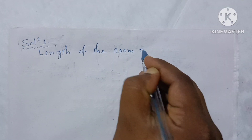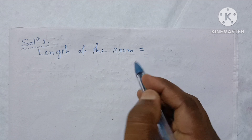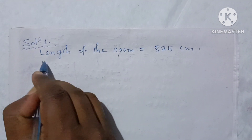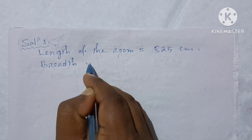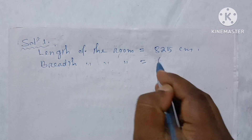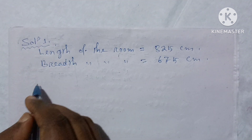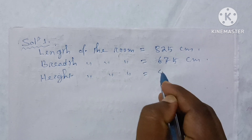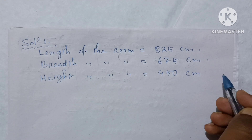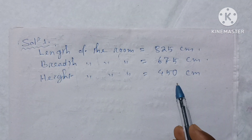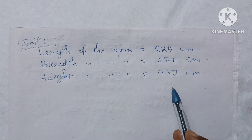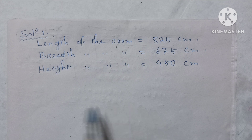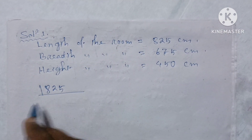The length of the room is 825 cm, the height of the room is 675 cm, the height of the room is 450 cm. We are looking for the common factor of 825 cm.